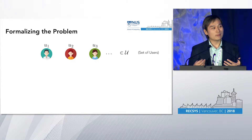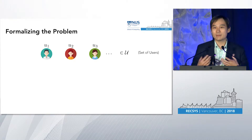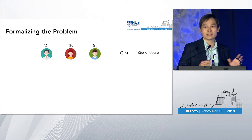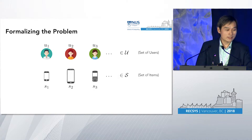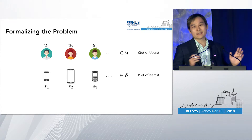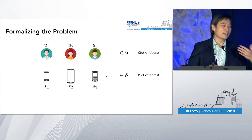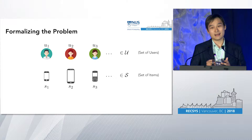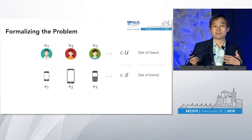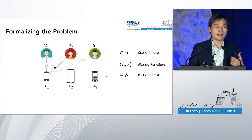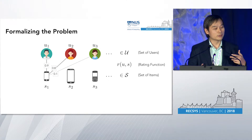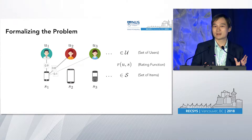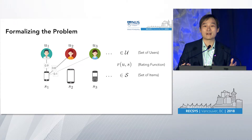In this work, we basically formalize this problem and then develop methods to answer these three questions simultaneously. We start in a very natural way: we have a bunch of users and a bunch of items that we could create, and we have a rating function. This rating function tells you how much a particular user likes a particular item. Here, user one and user two like the cell phone S1; user three, not so much. We have these for every pair of item and user.